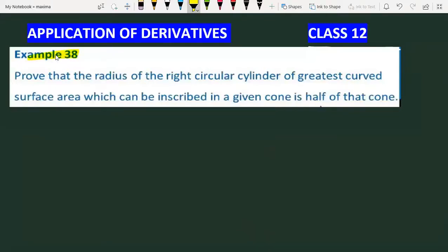Example 38. Prove that the radius of the right circular cylinder of greatest CSA—it is a cylinder which has greatest CSA—we have to show the maximum curved surface area.